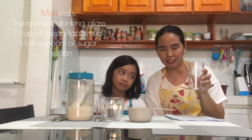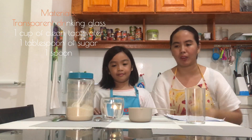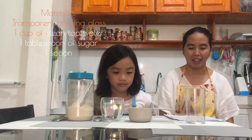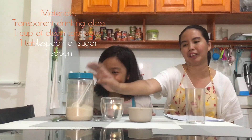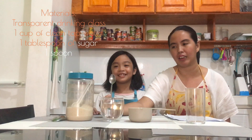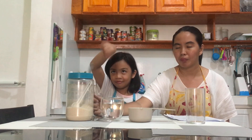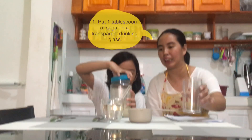We need a transparent drinking glass and one cup of clean tap water. We will also be using one tablespoon of sugar. I also prepared a spoon and an extra big spoon to mix the water and sugar. First procedure: put one tablespoon of sugar in a transparent drinking glass.